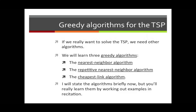Why are they called greedy? Because in each one of these algorithms, you act as a greedy person might do. That is to say, at every point, you either grab the most that you can or you give up the least that you can. You should think that at every step, you're doing the greedy thing. We're going to learn about three algorithms: the nearest neighbor algorithm, the repetitive nearest neighbor algorithm, and the cheapest link algorithm. I'm going to state those algorithms briefly here, but the way you're really going to learn how they work is to work them out in the examples given in recitation.